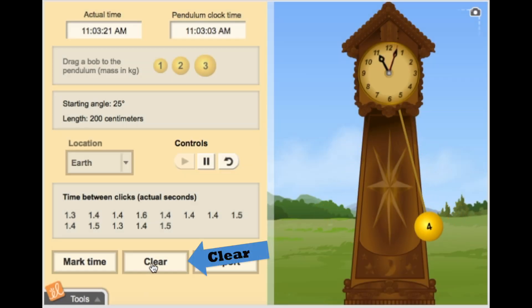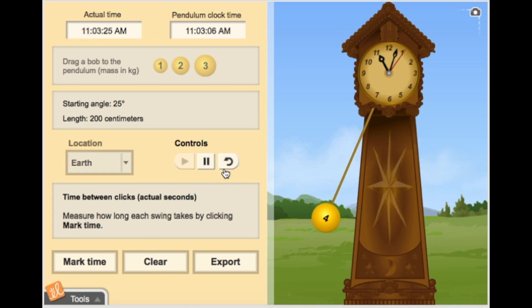I can also clear the data by clicking on Clear. Just like our clock on Earth, we can use the gizmo to show how time is affected on Jupiter.